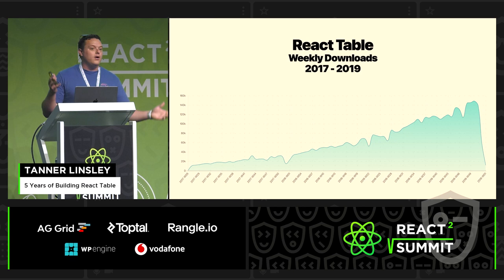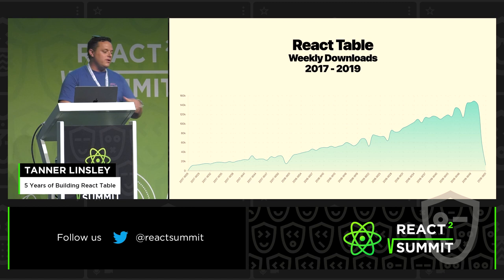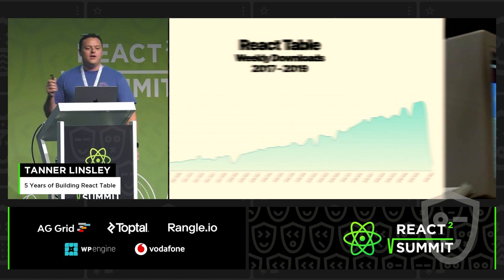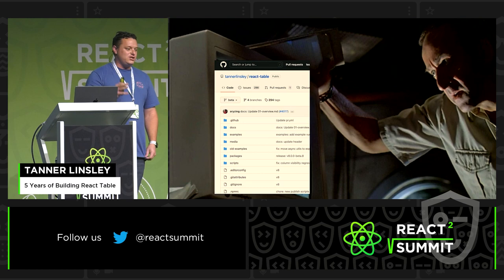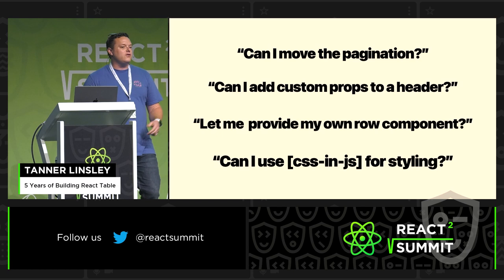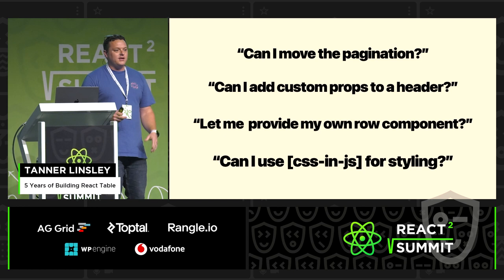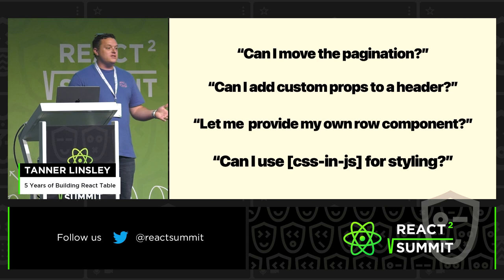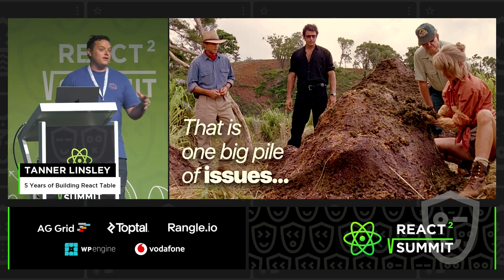While we were loving the success on the NPM downloads chart, a storm was brewing on the GitHub repo in the form of just issues — tons of issues. We were getting inundated, and they all looked like this: Can I move pagination? Give me custom props. Can I use my own row component? Can I use whatever CSS-in-JS library is out this week? Can I do anything with the markup? And the reality is I couldn't answer any of those questions — I didn't have the options to do that.